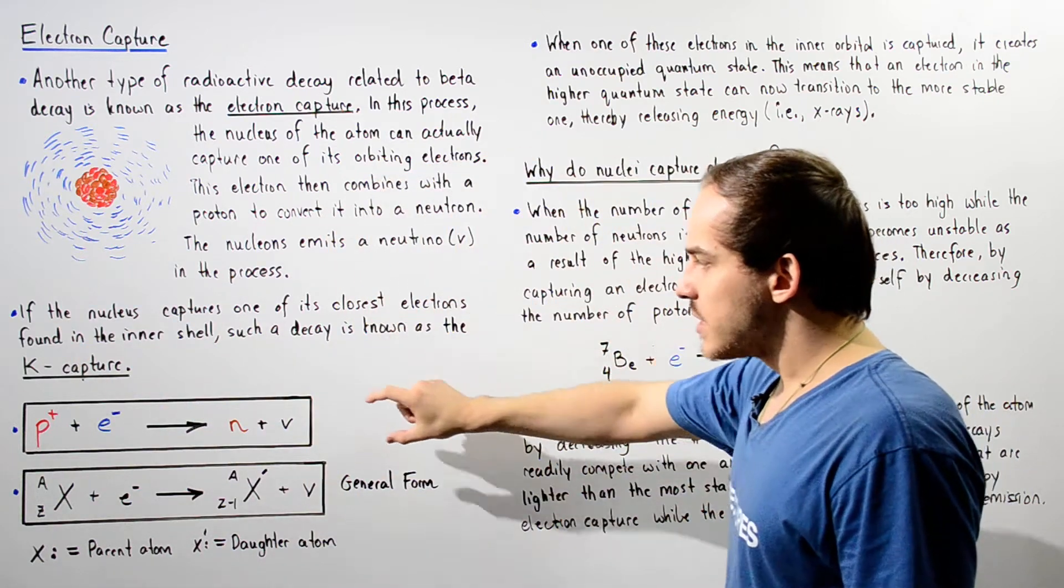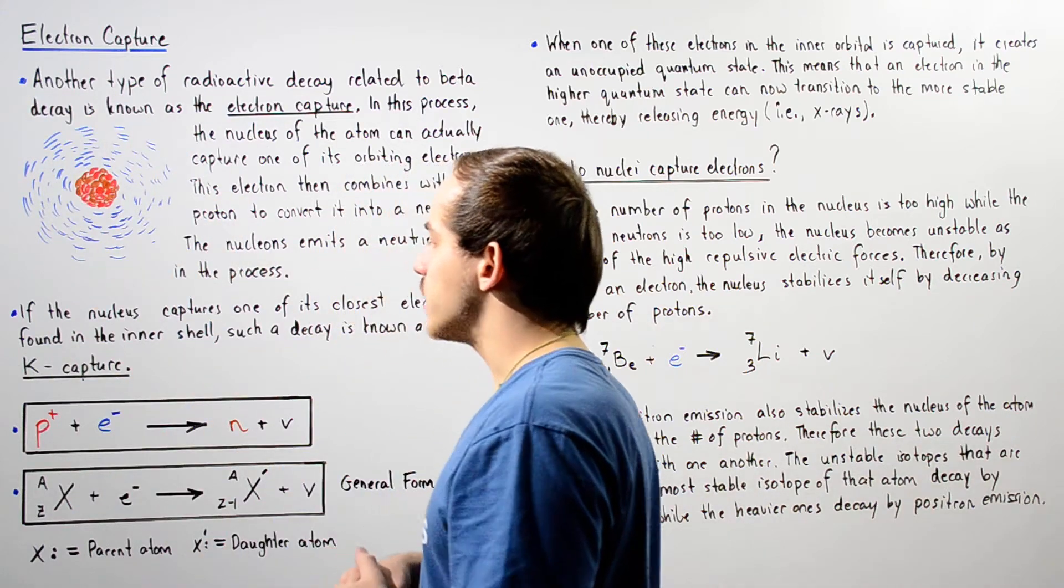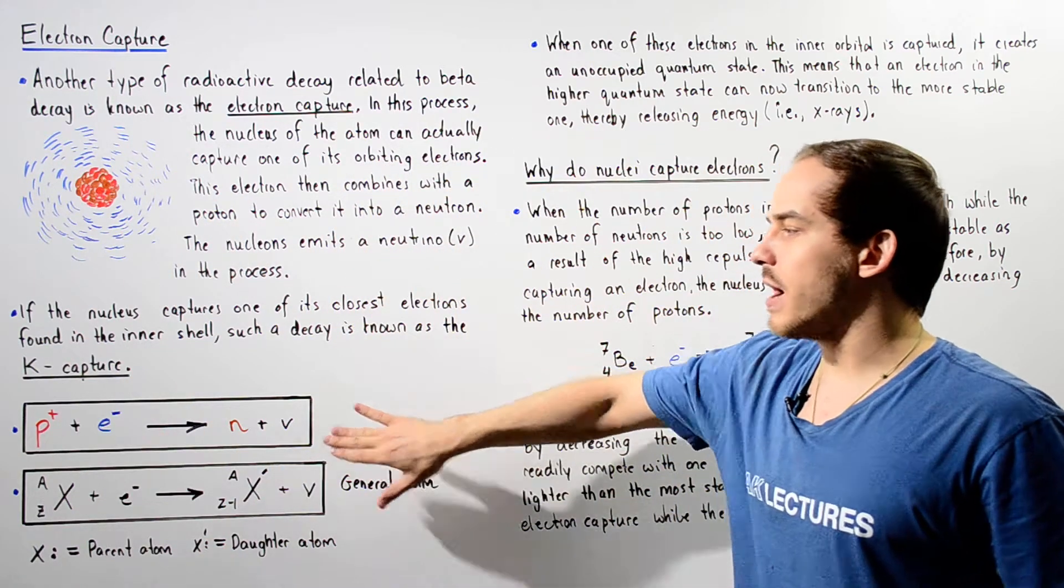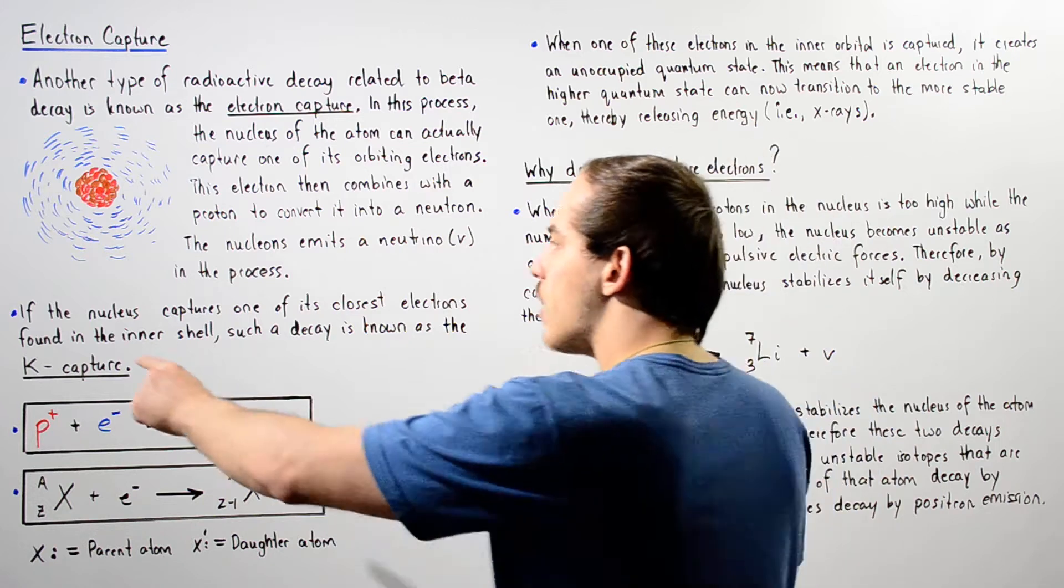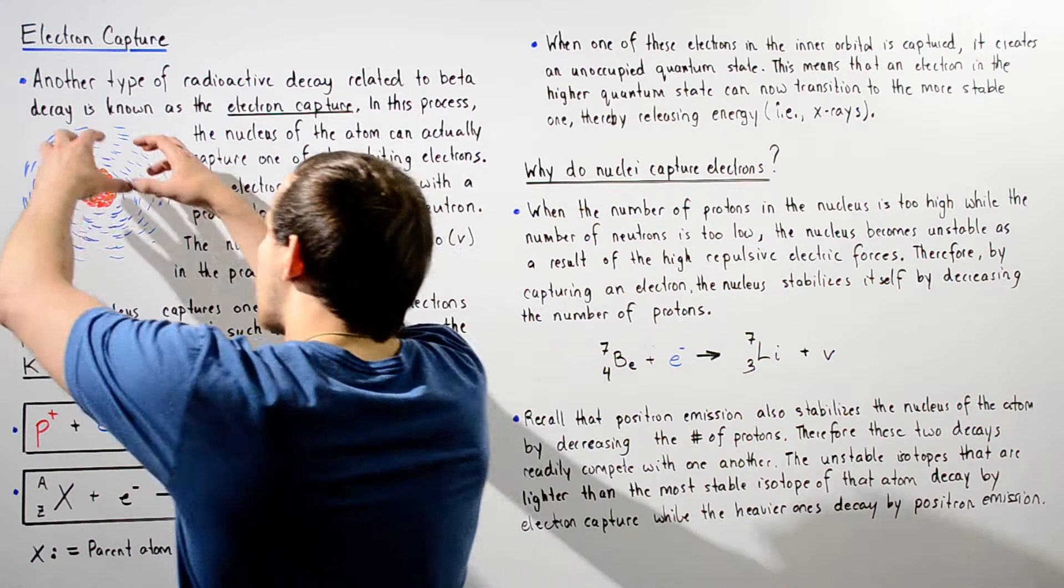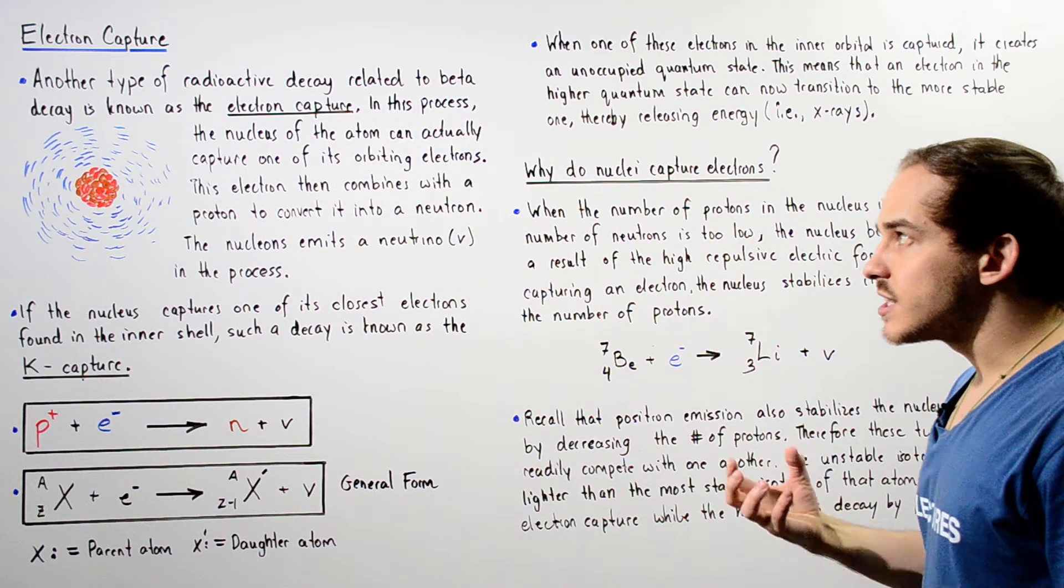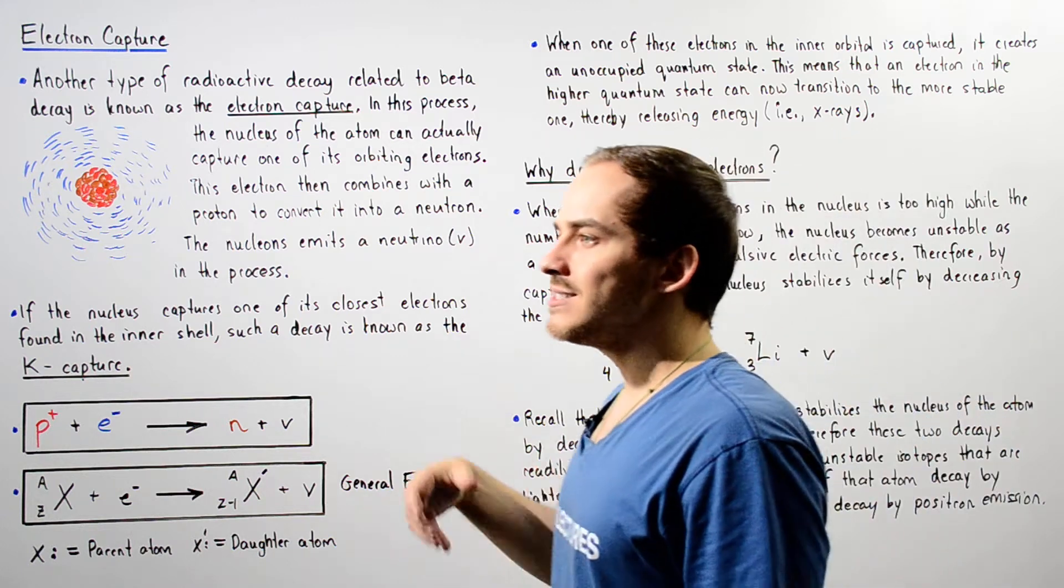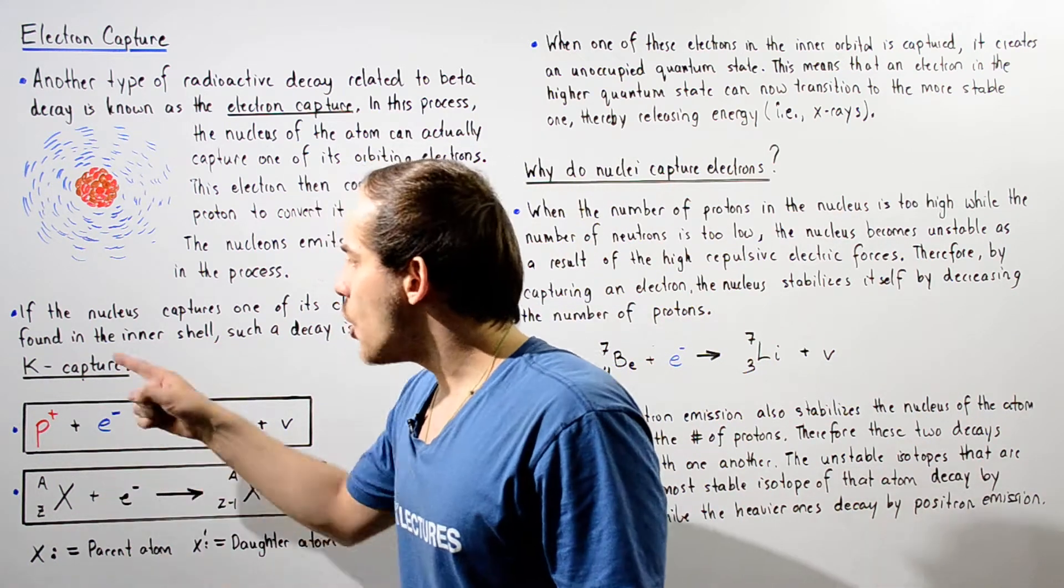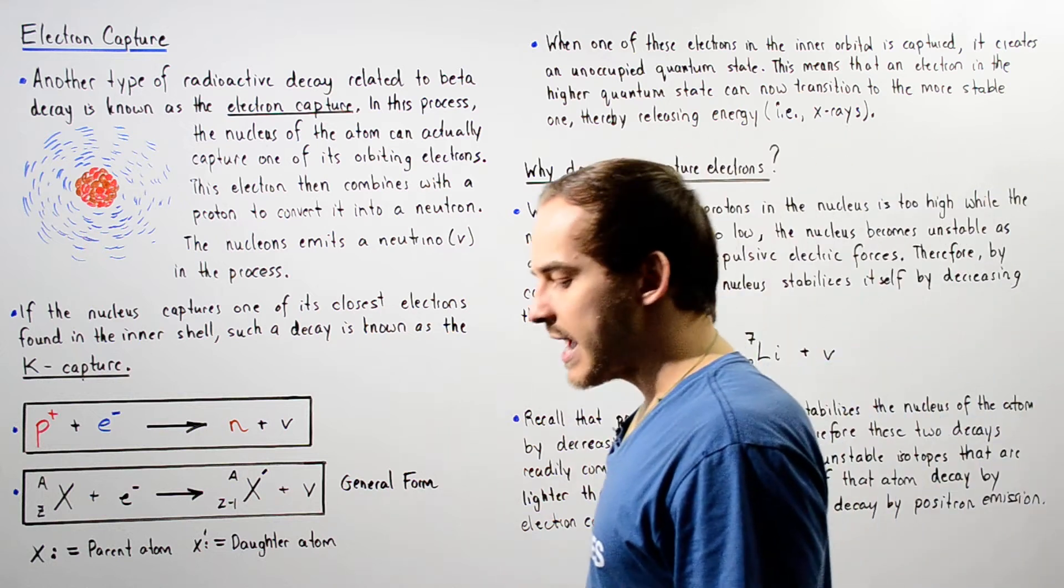So basically, the equation that describes what takes place within the electron capture decay is given by this equation. Now if the nucleus captures one of those electrons in the innermost shell of our electron density, then such an electron capture is typically given a name known as the K-capture or the K-electron capture.